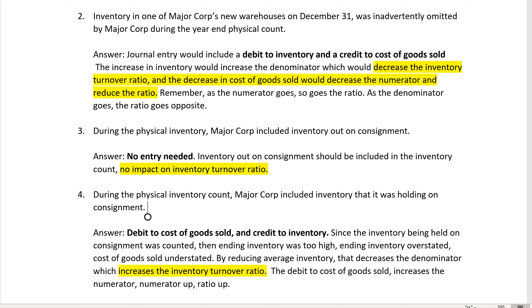The ratio for inventory turnover is cost of goods sold divided by average inventory. If cost of goods sold is going up, then numerator up — numerator up, ratio up. In number four, inventory gets credited, so inventory down, denominator down — denominator down, ratio up.